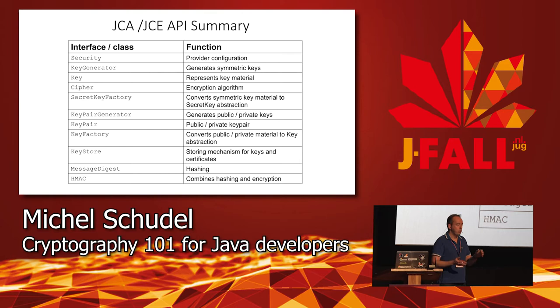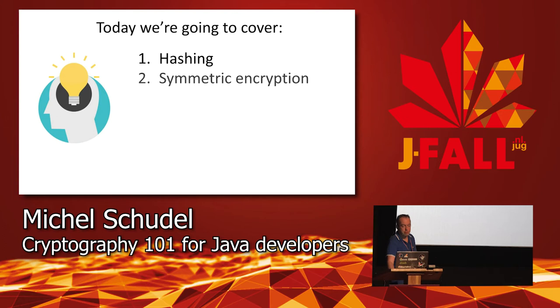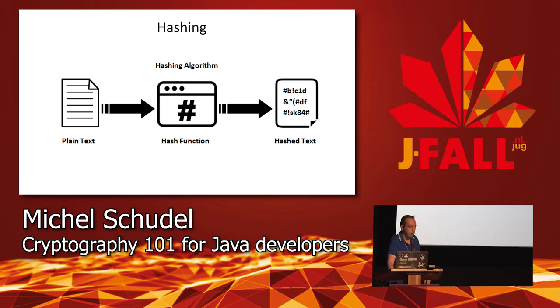These are the classes you'll mostly use for cryptography in Java - about eight to ten classes that cover most cryptographic operations. Today we're going to cover hashing, symmetric encryption, asymmetric encryption, digital signatures, and certificates. This is all introductory stuff and we'll cover them one by one. Let's start with hashing.